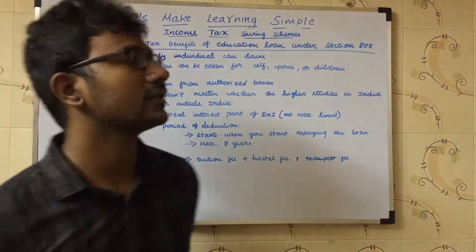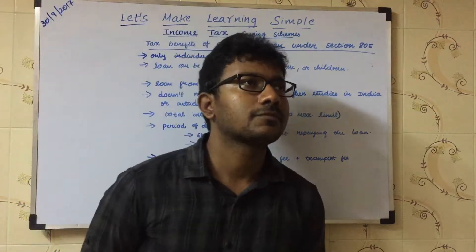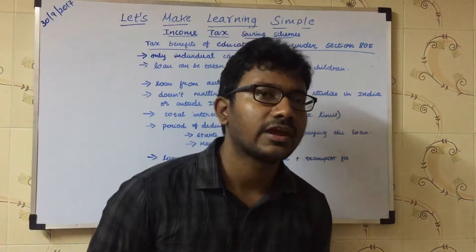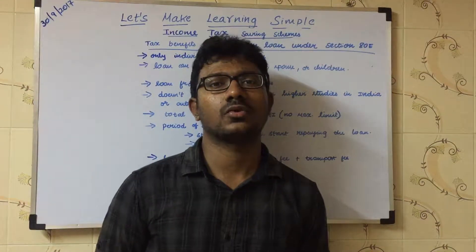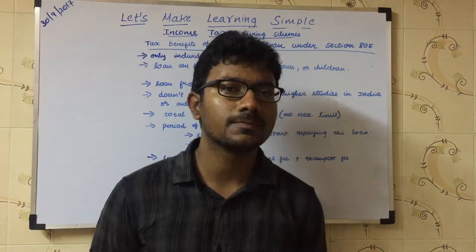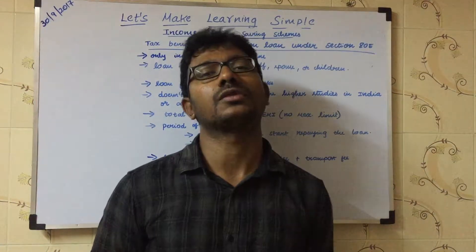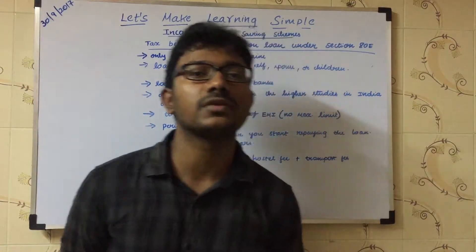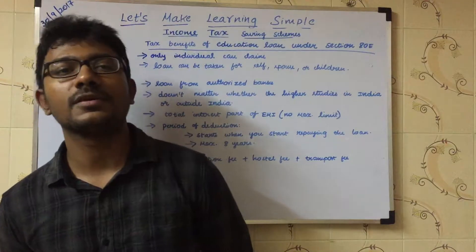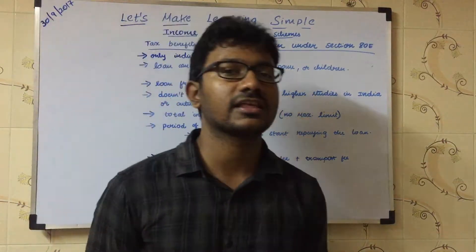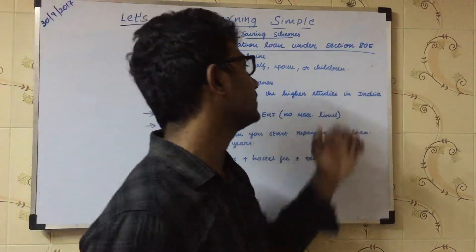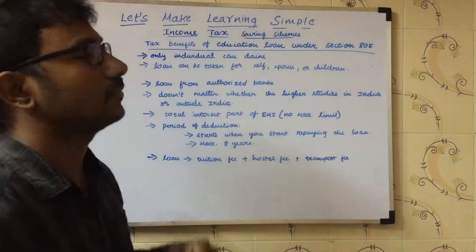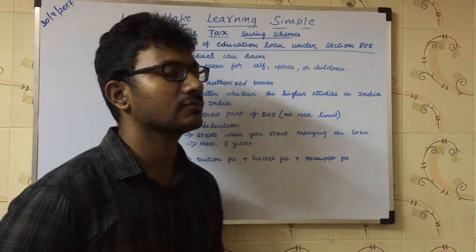Then comes the total interest. If you have taken a 5 lakh rupees loan and the total interest you need to pay every year is 50,000, then that 50,000 rupees is tax exempted under Section 80E. There is no maximum limit.